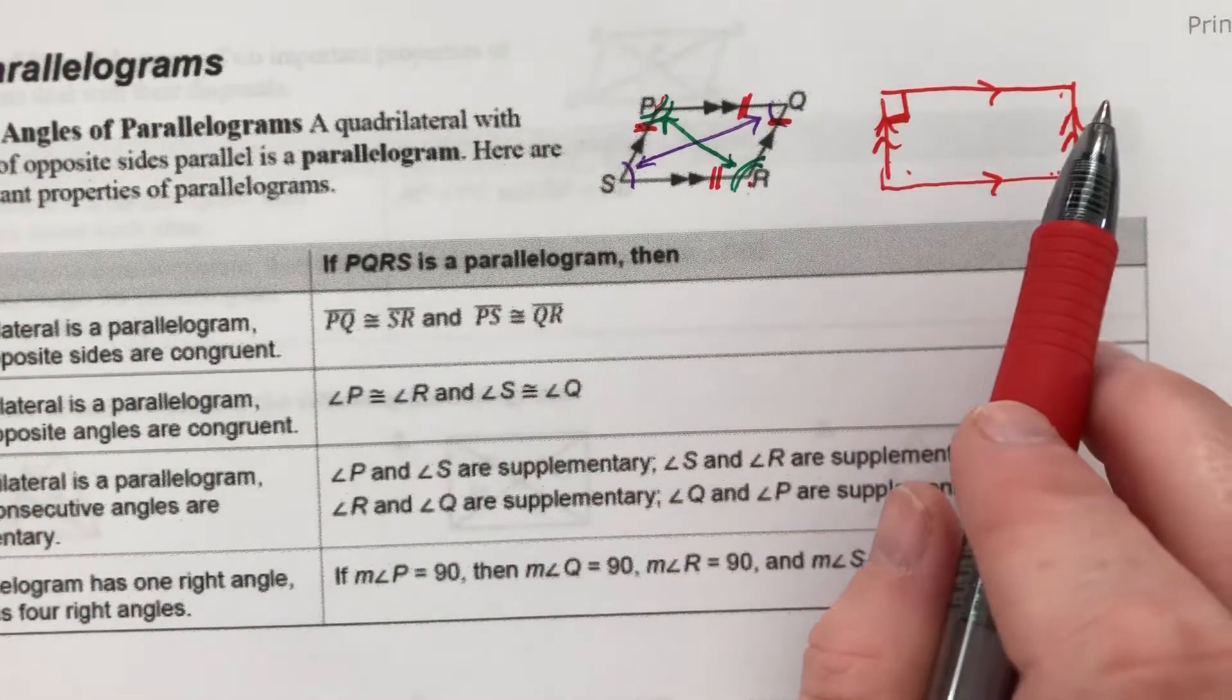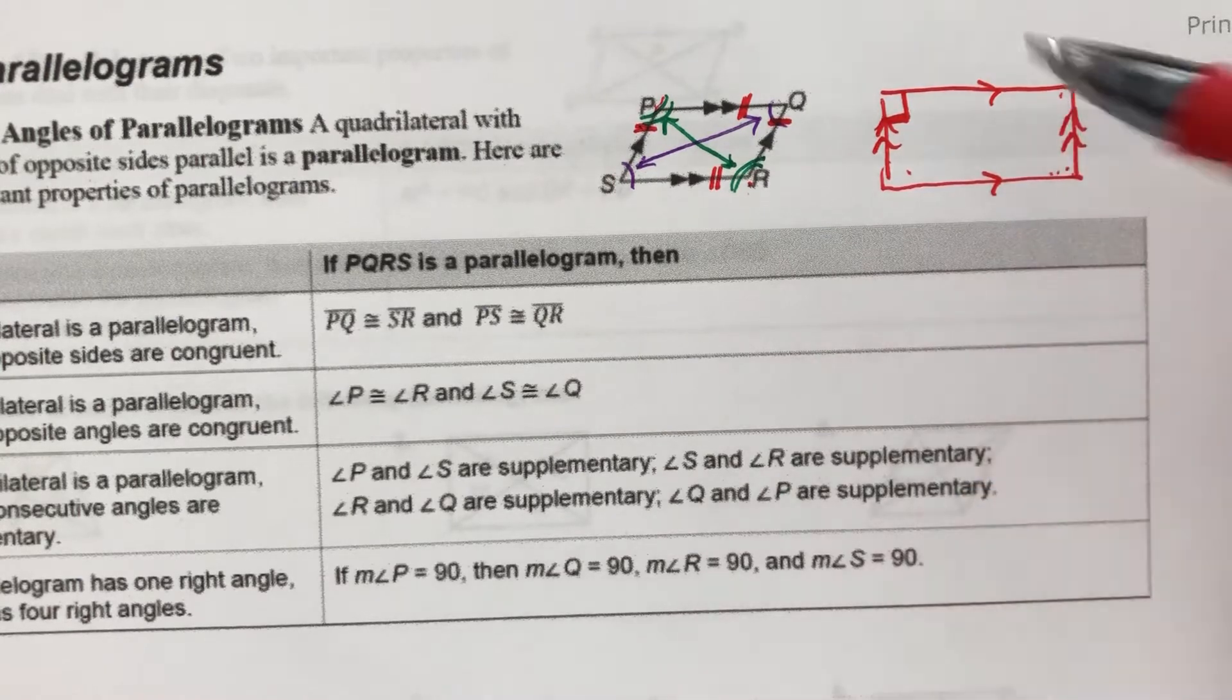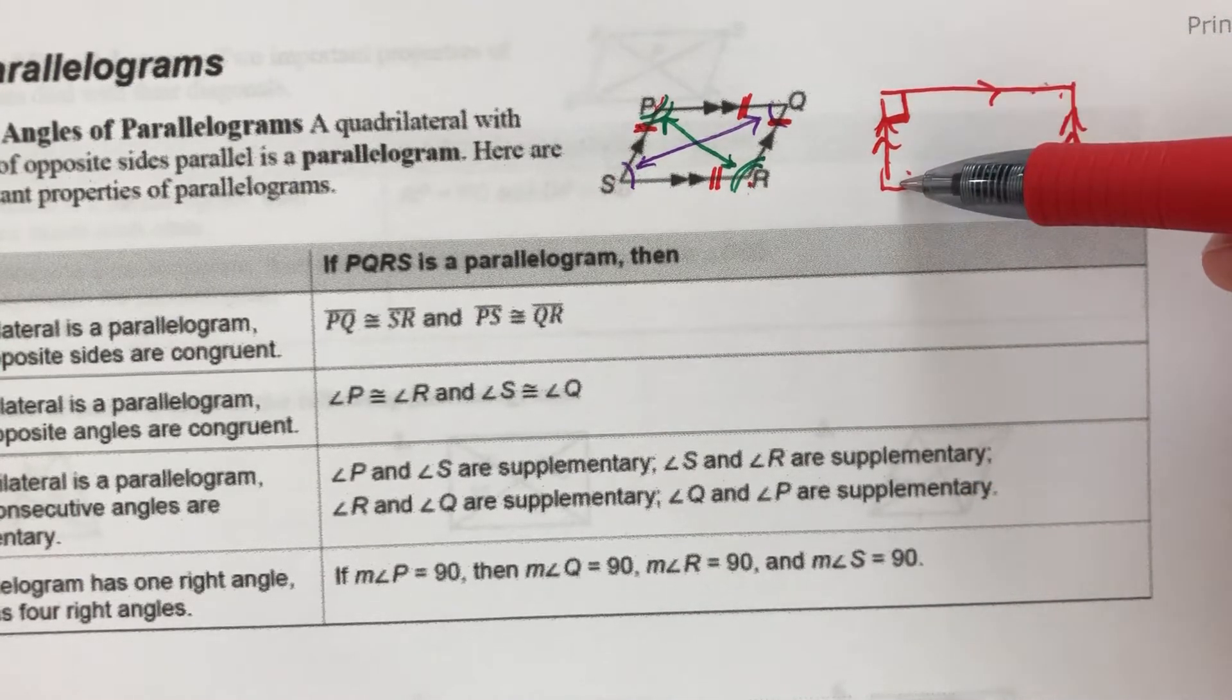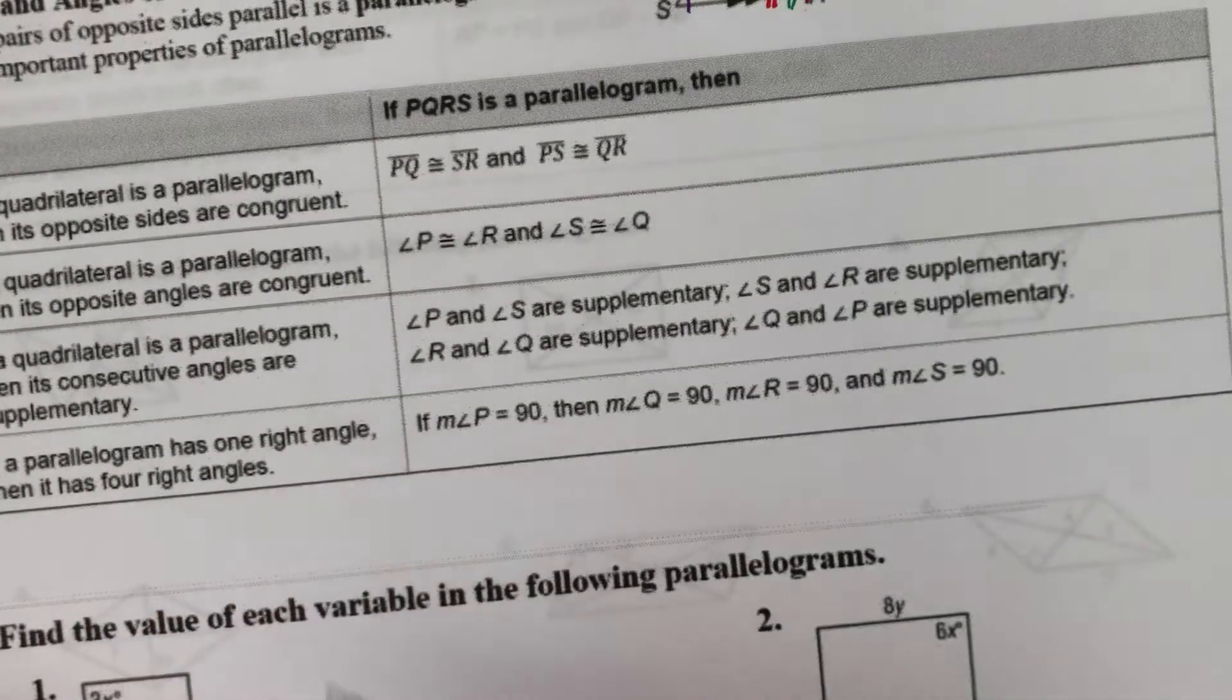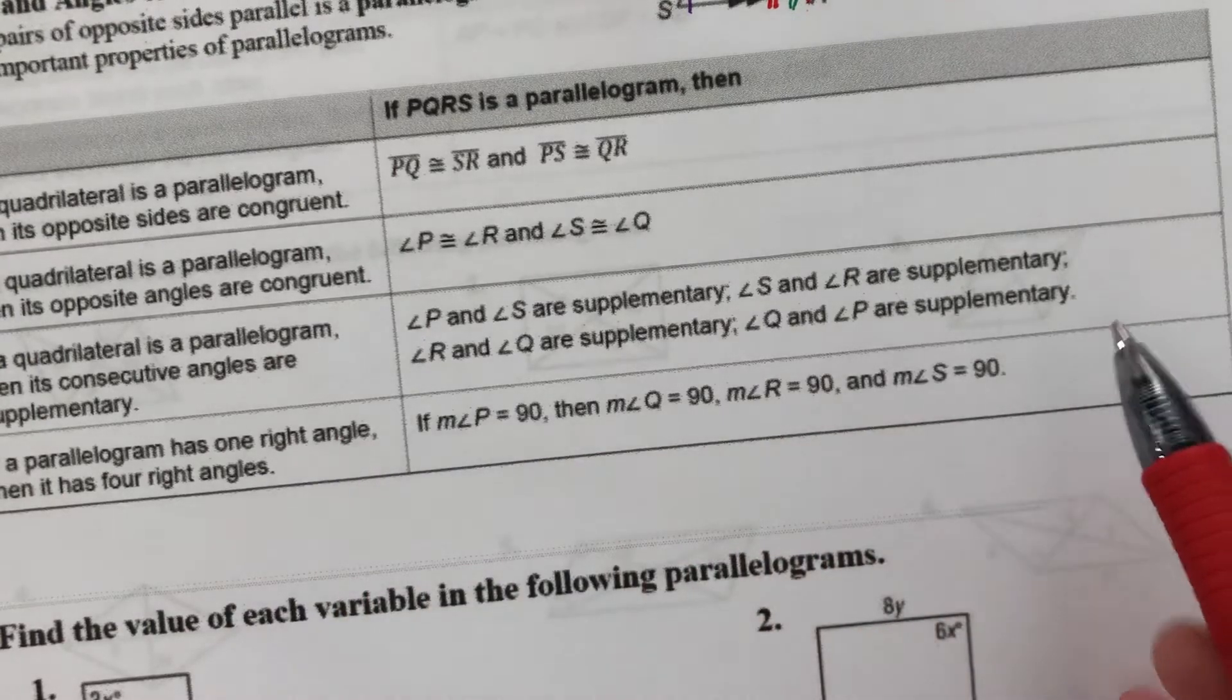Because if this is parallel to this, then this angle has to be the same as this angle. And if these two lines are parallel, then this angle has to be the same as this guy. They're all 90 degrees. So that's one rule about parallelograms. If one of the four angles is right, they're all right.